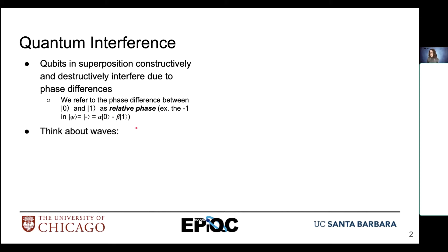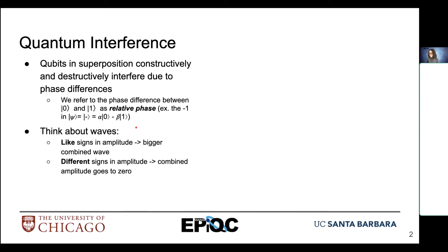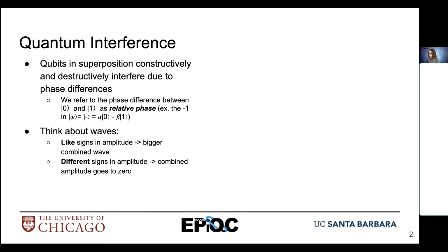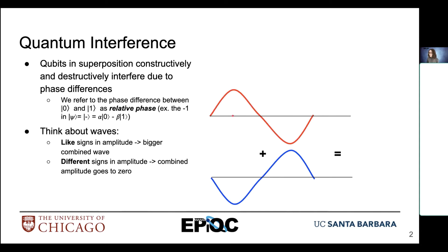How do we think about how this works to cause information to be processed in a quantum sense? We can think about waves: when we have like signs and amplitude, we create a bigger combined wave — that's constructive interference. When we have different signs, perhaps a plus and a minus, combining those gives an amplitude that gets closer to zero — that's destructive interference, where the two waves cancel each other out.